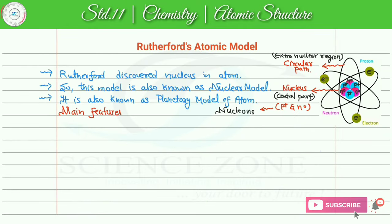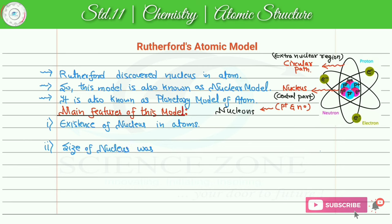The main features of Rutherford's model are: First, the existence of the nucleus in the atom. Second, the size of the nucleus was predicted to be approximately 10 raised to minus 15 meters in radius. The atom's radius is around 10 raised to minus 10 meters, while the nucleus radius is 10 raised to minus 15 meters — meaning the nucleus is almost one million times smaller than the whole atom.